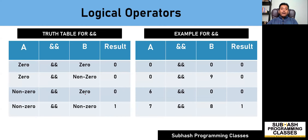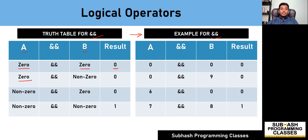As you can see on the screen, I have given you the truth table for the logical AND-AND operator, as well as an example to solve for the evaluation of AND-AND operators. If given two inputs A and B, and if the value of A is 0 and the value of B is 0, then A logical AND-AND with B will result in a value of 0. Similarly, 0 AND-AND with non-zero will result in 0, non-zero AND-AND with 0 will result in 0, and non-zero AND-AND with non-zero will result in a value of 1. So this is the truth table for the logical AND-AND operator.